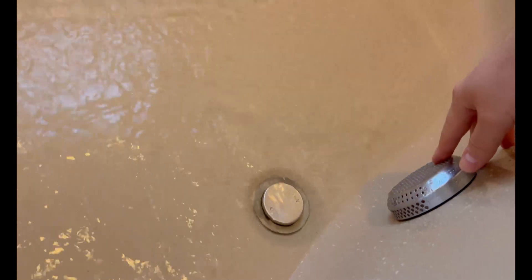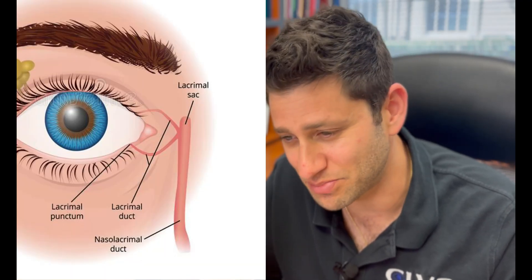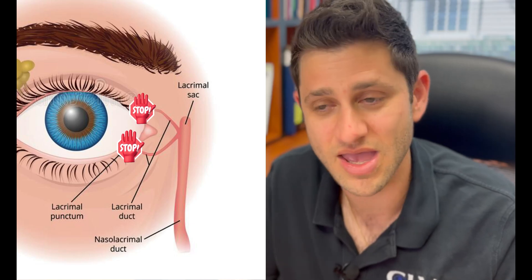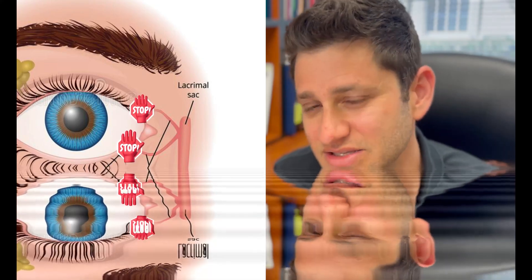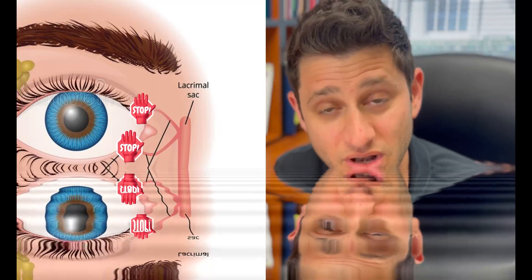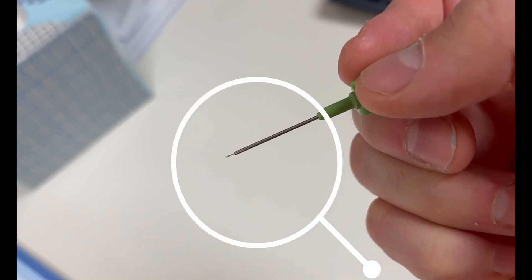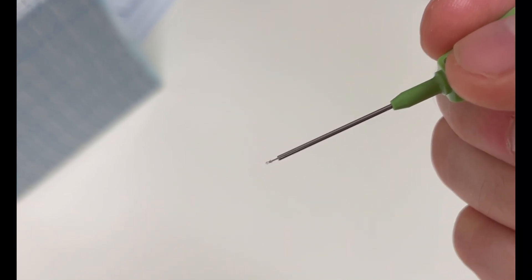The tears drain into tiny eyelid holes called puncta, which eventually drain into your nose and mouth. Here in the clinic we can put a little stopper into those puncta — at least one, maybe two — to limit the drainage. So even if you're not producing a lot of tears naturally, preventing drainage increases the liquid on the eye and improves the ocular surface. It's called a punctal plug, it takes just a minute to do, and it's often covered by insurance.